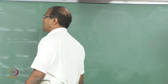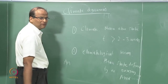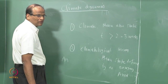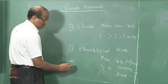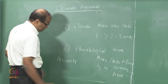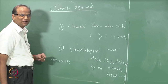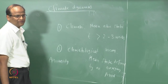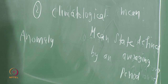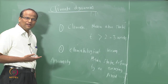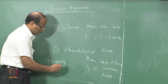What is the spelling of anomaly? Anomaly. Sometimes difficult to spell, but when we write, we can find out if there is a mistake or not. What is anomaly? Some abnormal deviation from the mean.